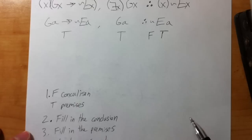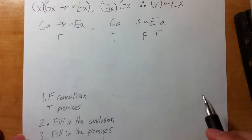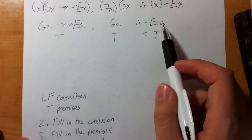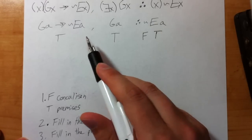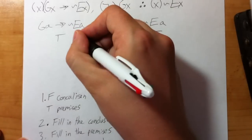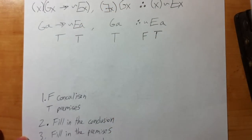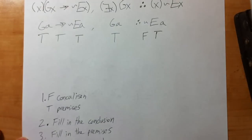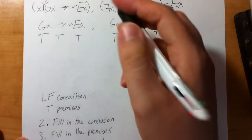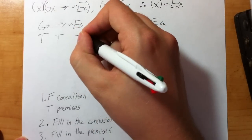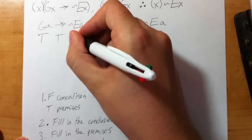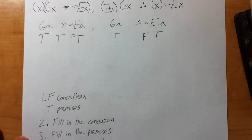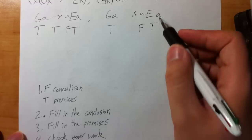Step three: fill in the premises. I play Wheel of Fortune — if I know something is true in the conclusion, it's true in the premises too. So if EA is true there, it has to be true in the premises. If GA is true here, it has to be true there too. The only thing left without a value is the tilde, and if EA is true that makes the tilde false.